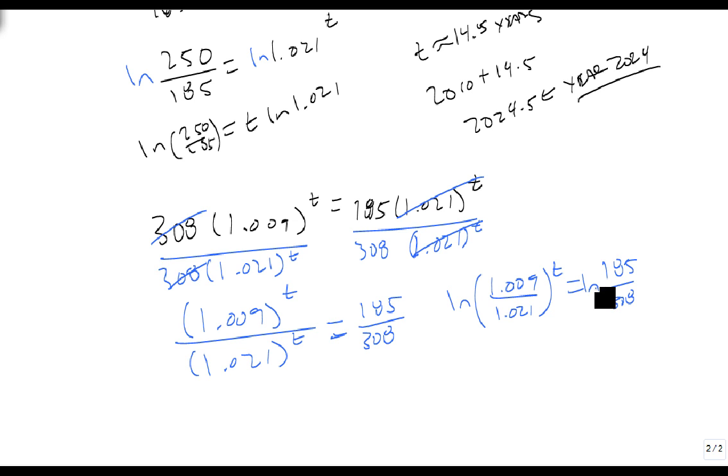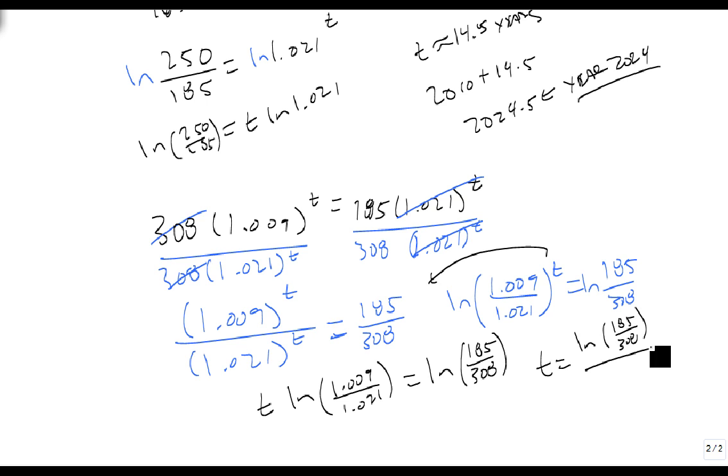Take the natural log of both sides, move the t to the front, and t times the natural log of 1.009 over 1.021 equals the natural log of 185 over 308. This then says that t is the natural log of 185 over 308 divided by the natural log of 1.009 over 1.021.